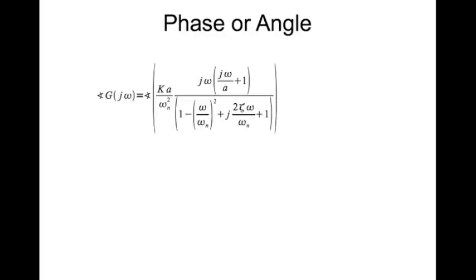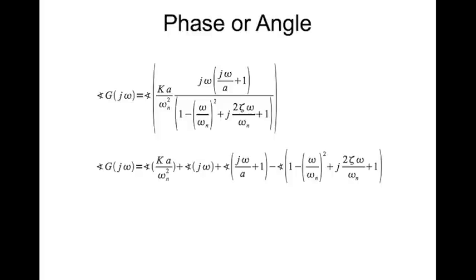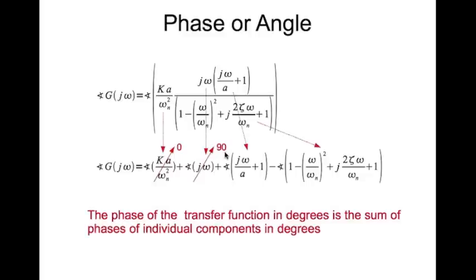Similarly, you can take the phase and you have the same sort of relationships. The total phase of the transfer function is the sum of the phases of individual components. These are the individual components. Phase of a positive real number is zero. Phase of a purely complex number is 90 degrees. So the phase of the transfer function in degrees is the sum of the phases of individual components in degrees.